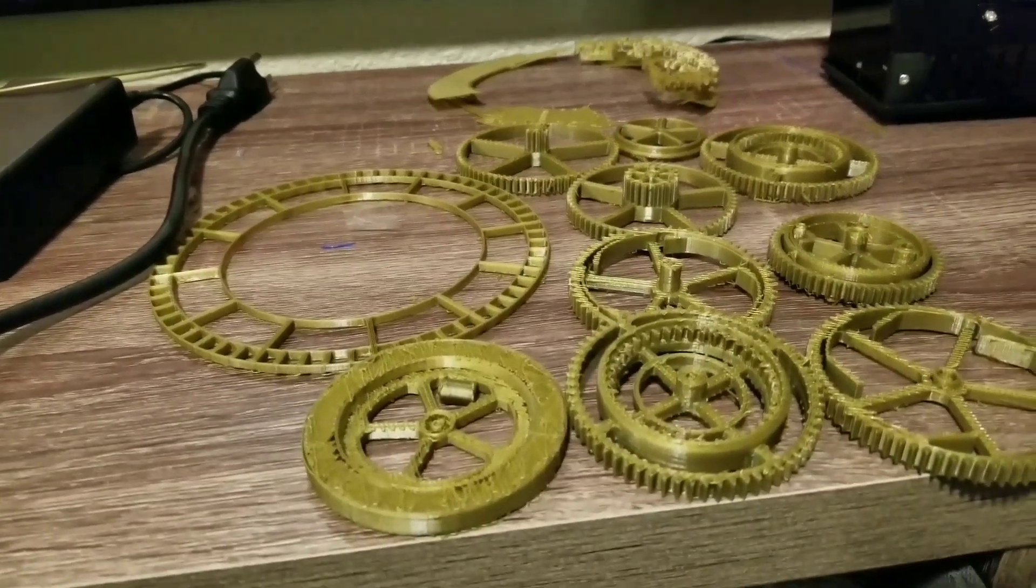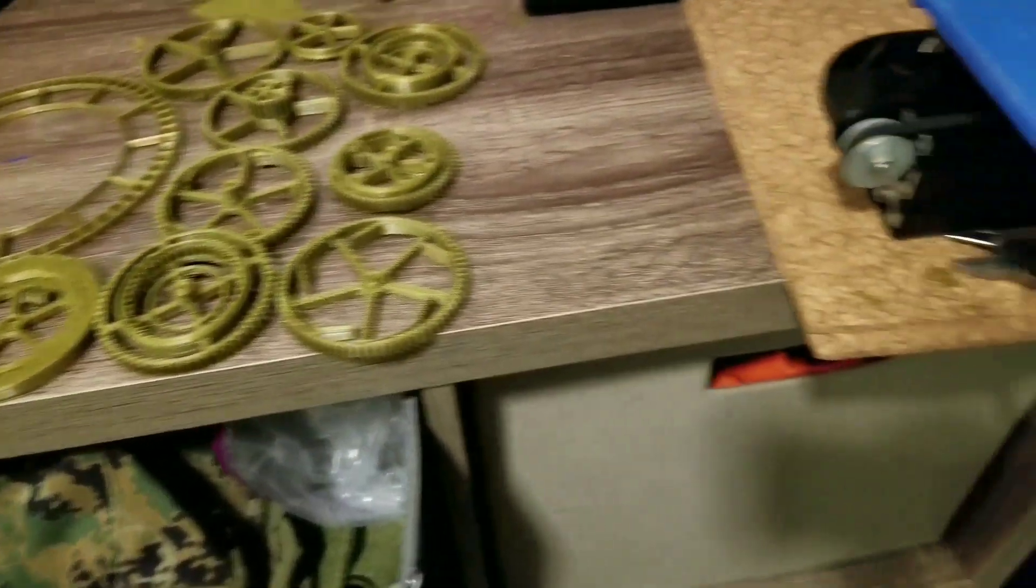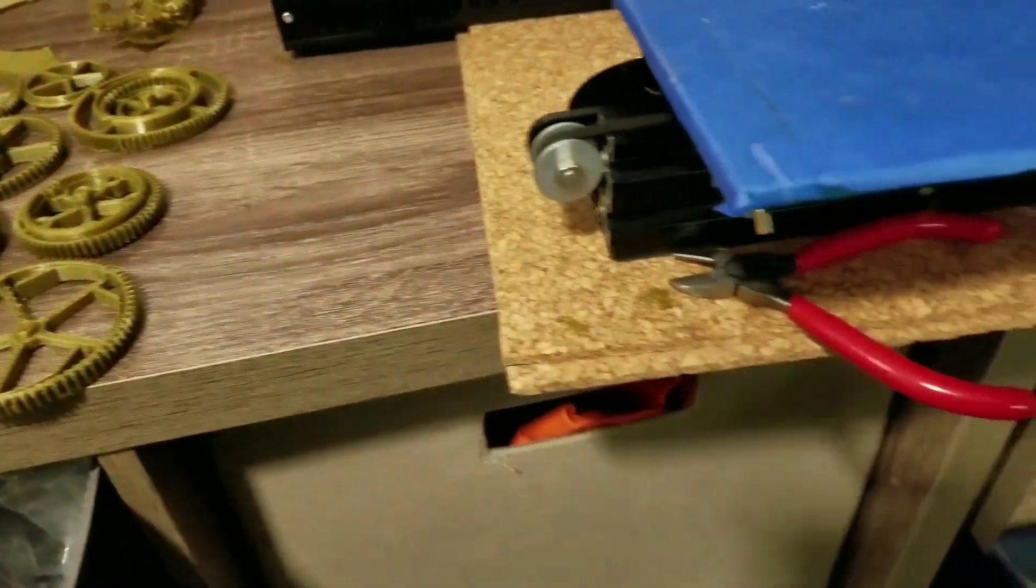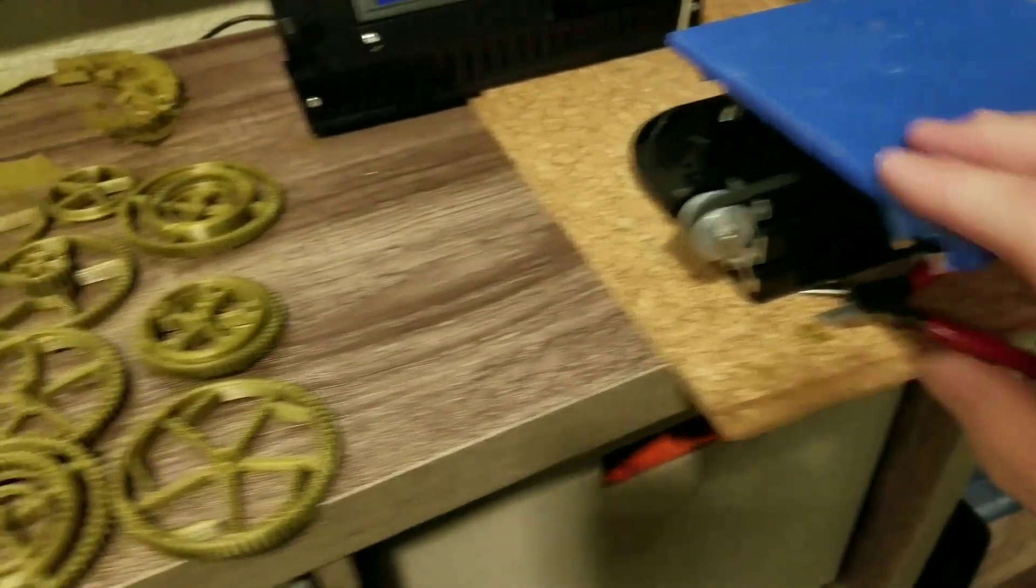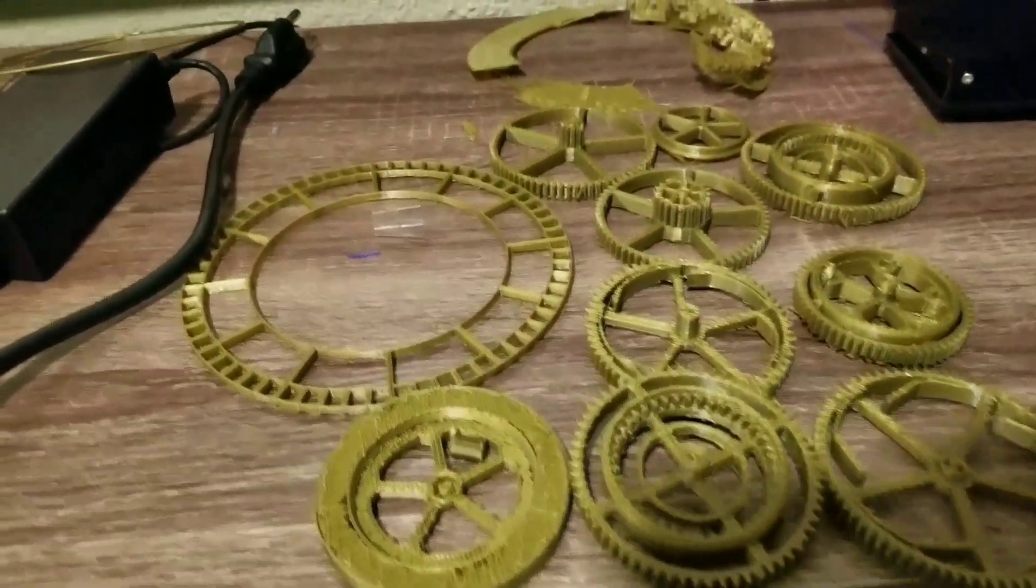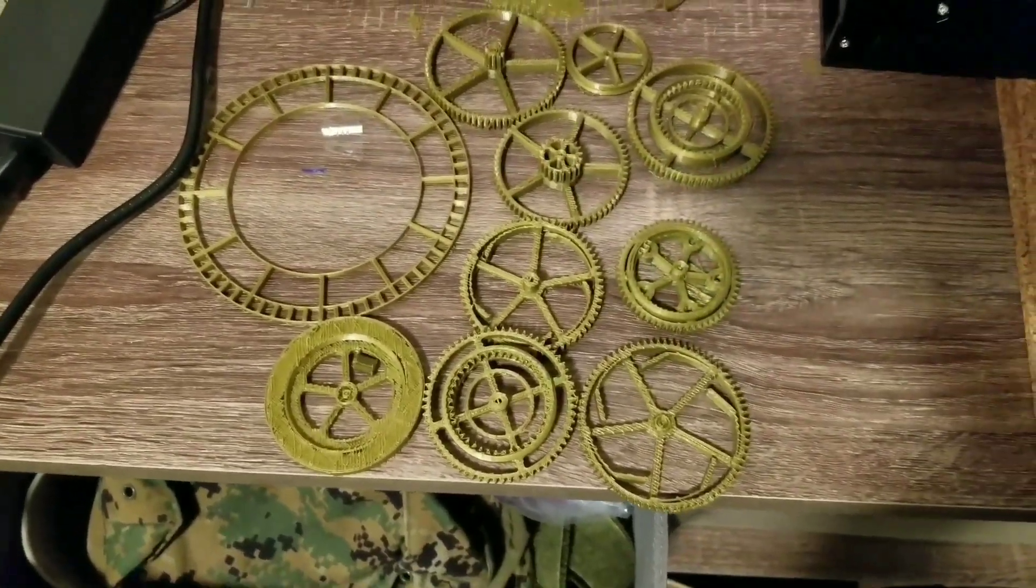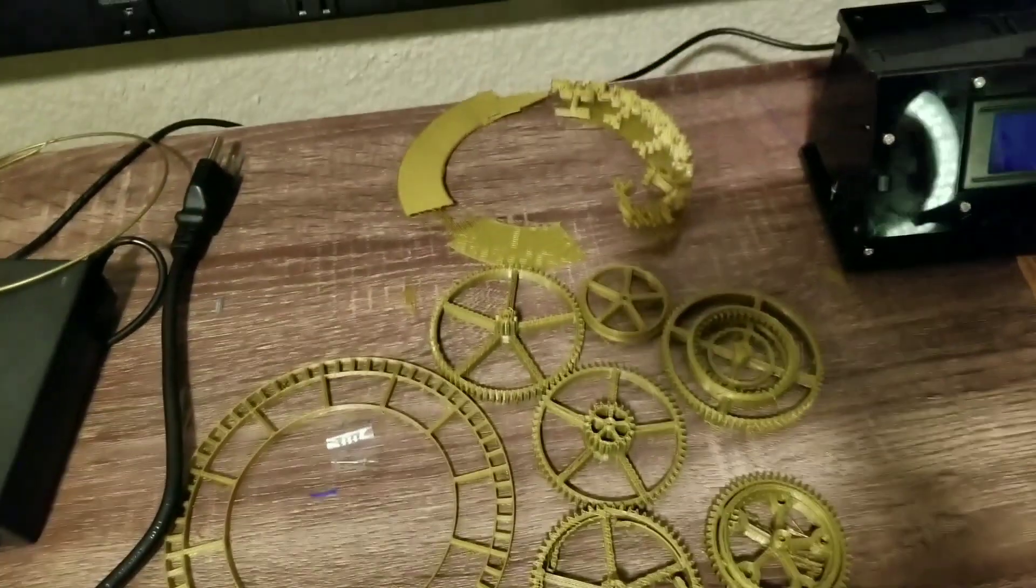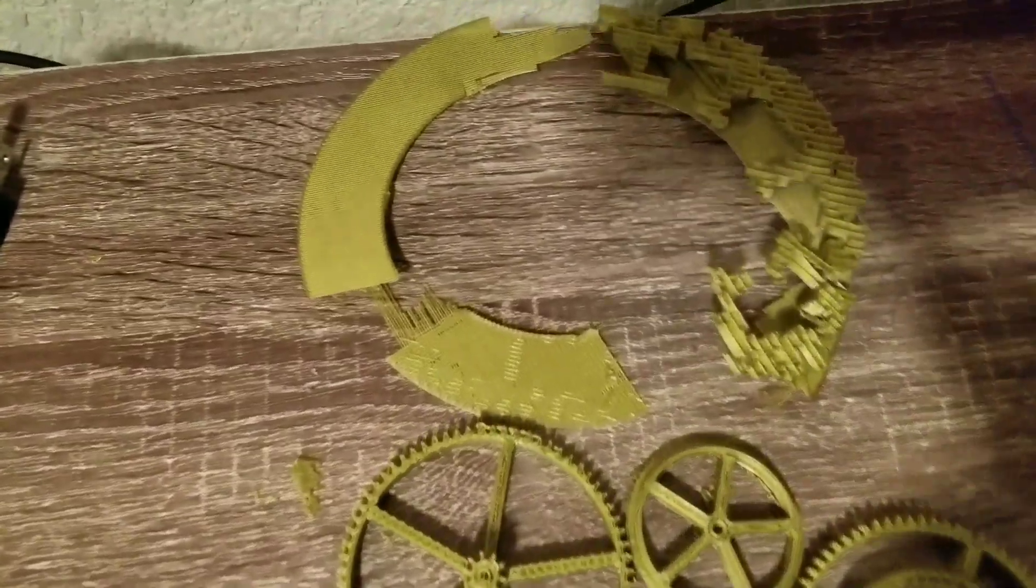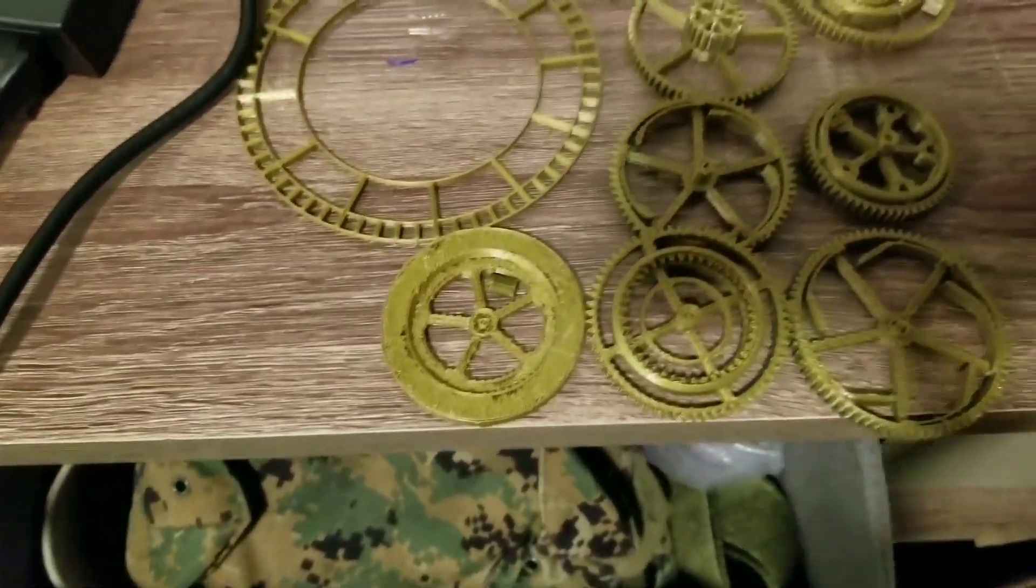Here are the results of the multiple part print on the Tronxy XY on a 150 millimeter by 150 millimeter bed. I was able to print this much material out in one print. There actually was a larger print directly underneath this clock face but you can see that it was so thin that it didn't come out very good at all, so it was pretty sacrificial.